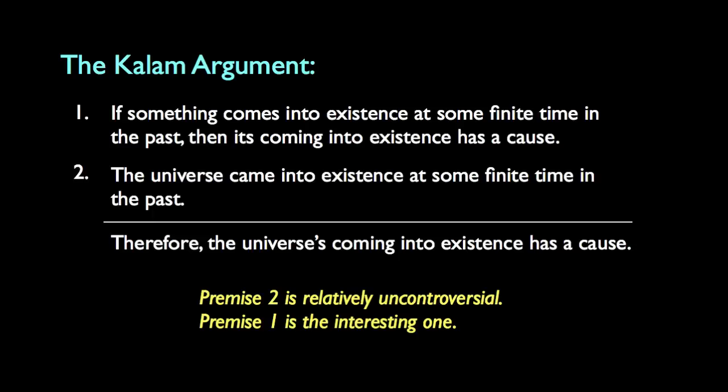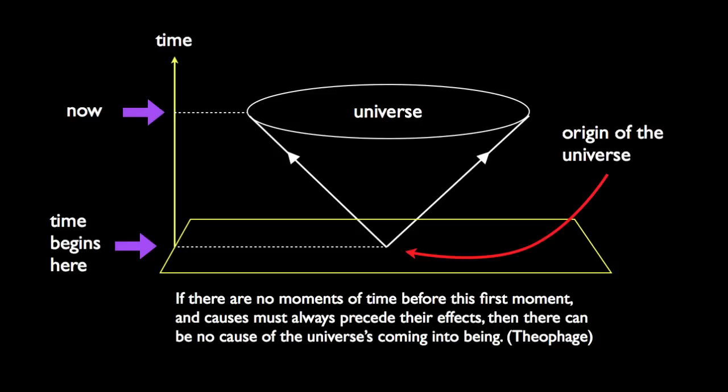Theophage's refutation strategy is to say that the universe's coming into existence is a special event that by its nature violates this metaphysical principle. Why? Because if we follow the standard interpretation of Big Bang cosmology, the beginning of the universe also marks the beginning of time itself — the beginning of temporal succession. That means we can't talk about moments of time prior to the first moment, because there are no such moments. If there are no moments prior to the beginning of the universe, then there can be no cause of the universe's coming into being, because causation is by its nature a temporal process. Causes necessarily precede their effects. Hence the universe's coming into being is an uncaused event, and the Kalam argument can't get off the ground.